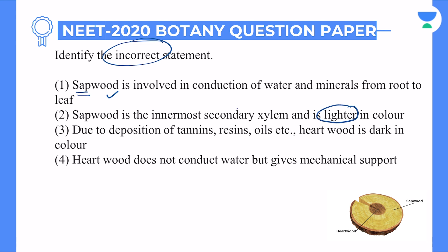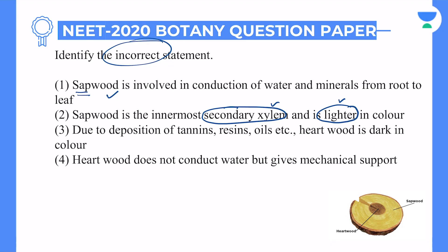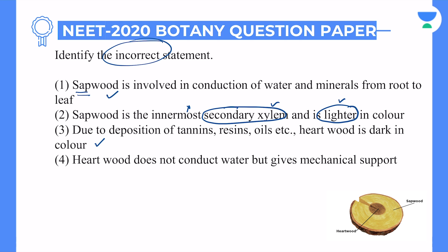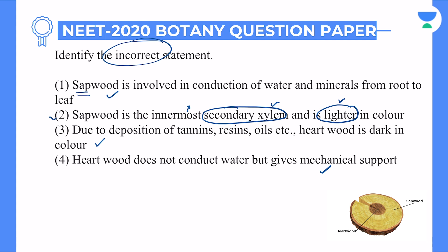Sapwood is not the innermost because the inner parts are primary xylem and heartwood. I'm holding this statement just because it says 'innermost.' Third statement — due to deposition of tannins, resins, oils, etc., heartwood is dark in color — which is correct, because heartwood doesn't conduct water, so secondary metabolites block it, making it dark with high density. Fourth option — heartwood does not conduct water but gives mechanical support — absolutely correct. So the answer for this question is option number two, the incorrect statement: sapwood is not the innermost.